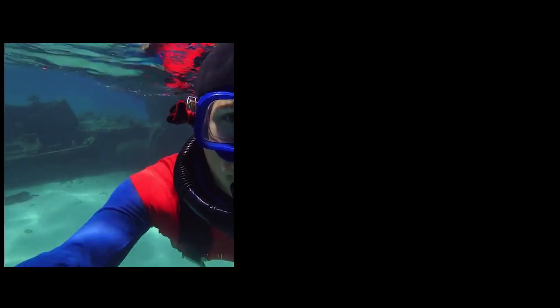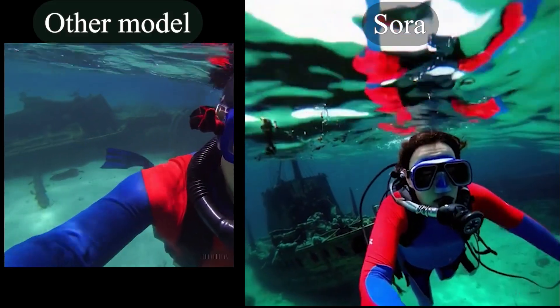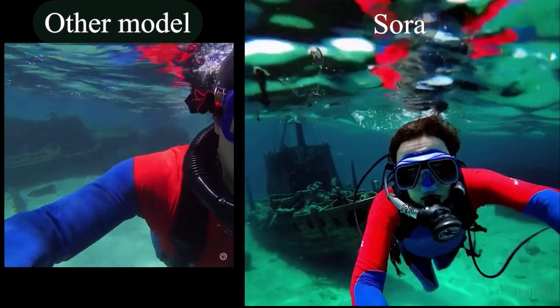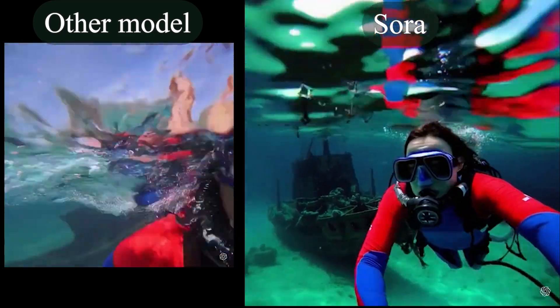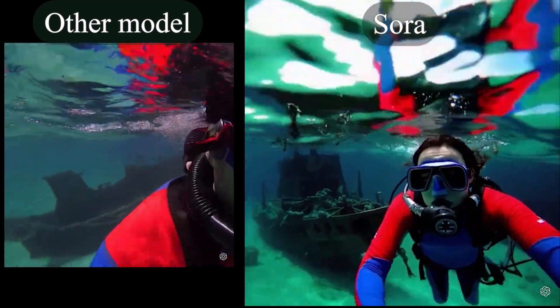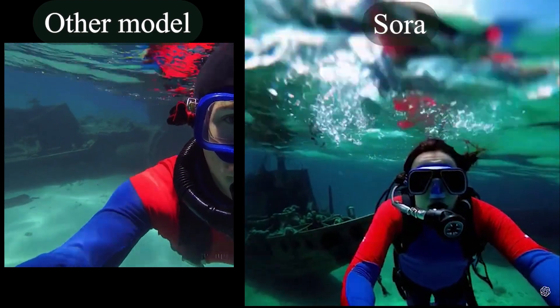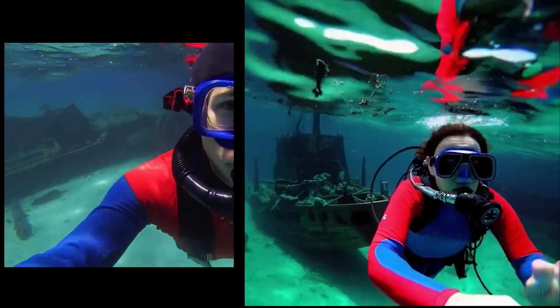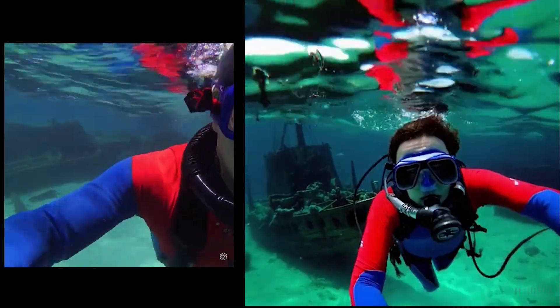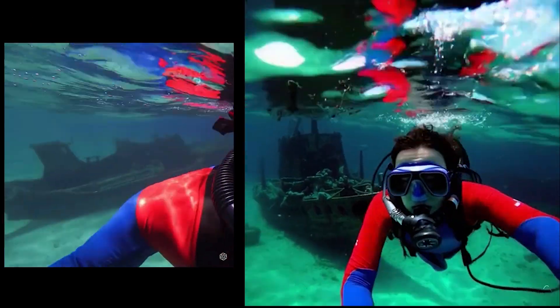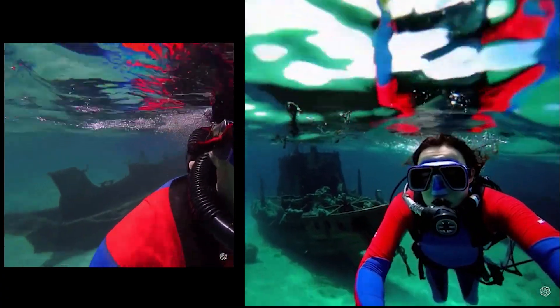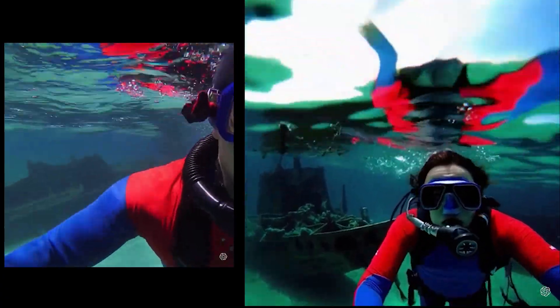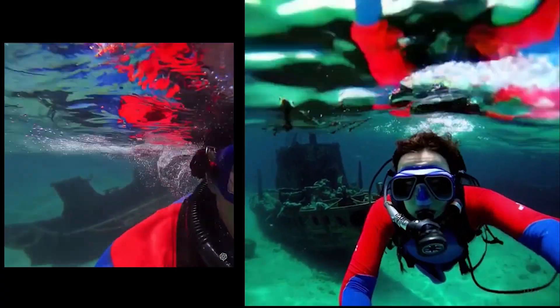Training on native aspect ratios for videos empirically improves composition and framing. Another model trained on square cropping sometimes creates videos where the subject is only partially visible. In contrast, Sora improves framing for incoming videos, making them more understandable.